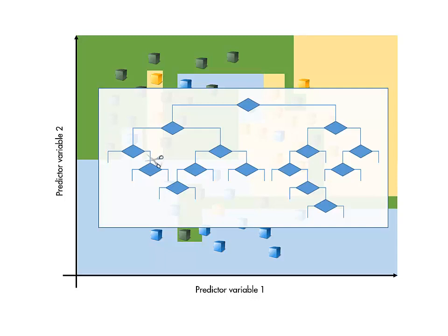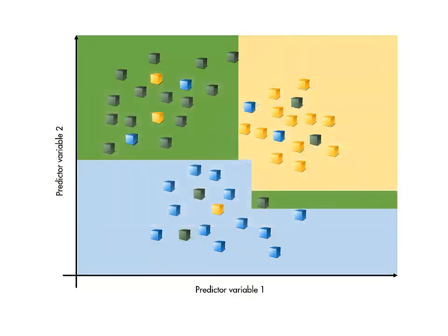You can prune a tree, that is, reduce the number of splits, to create a simpler model that may have a higher resubstitution loss, but better generalization to new data.